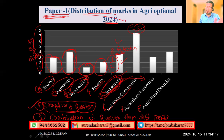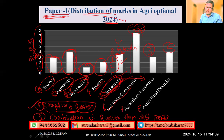From SWC (soil and water conservation), they asked 7.5 questions — seven questions plus half from a question on differentiating conventional tillage and conservation tillage. From economics, nearly three questions were asked, and four questions were from extension. So in Paper 1, SWC was given the most importance, while subjects like weed science and forestry were given the least importance.